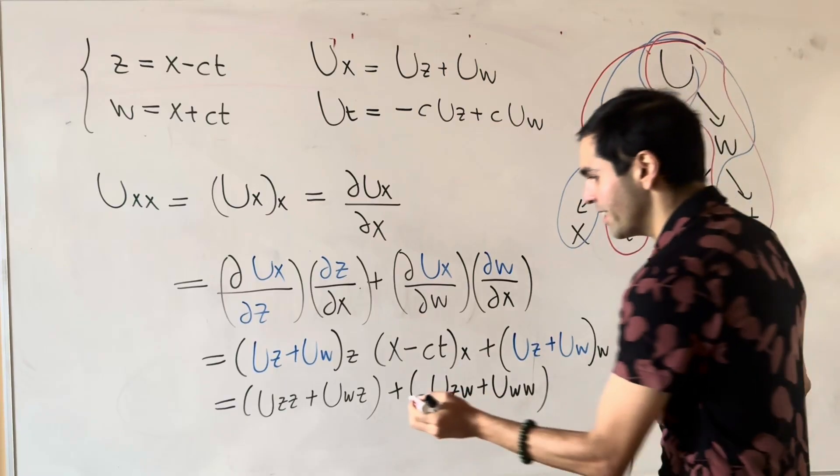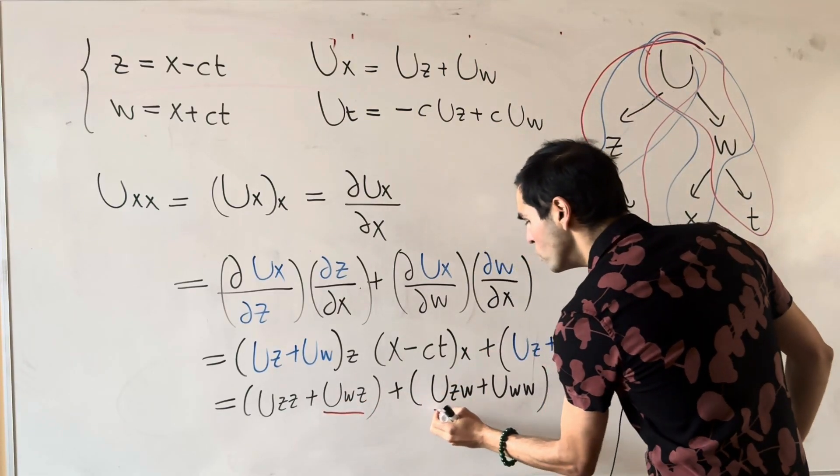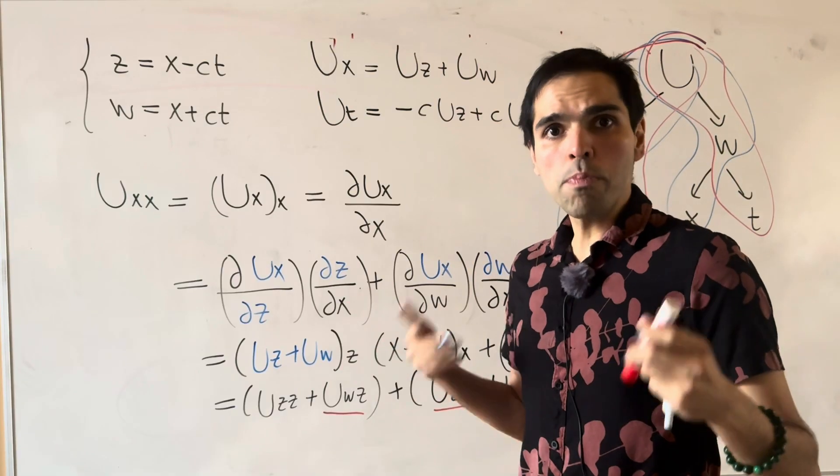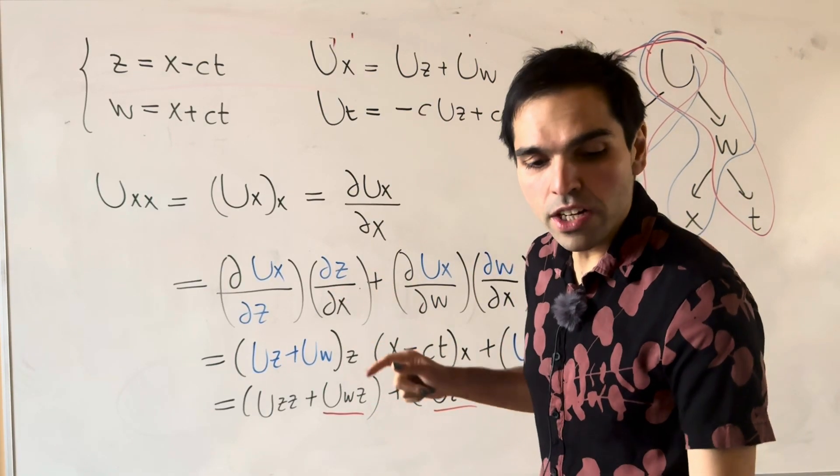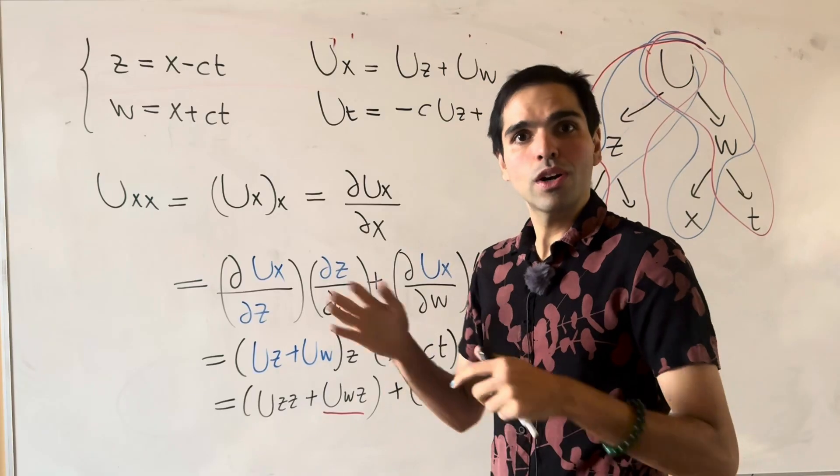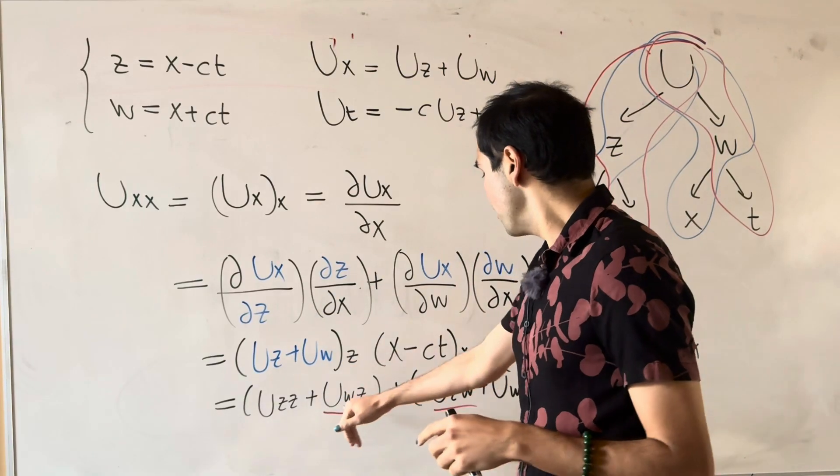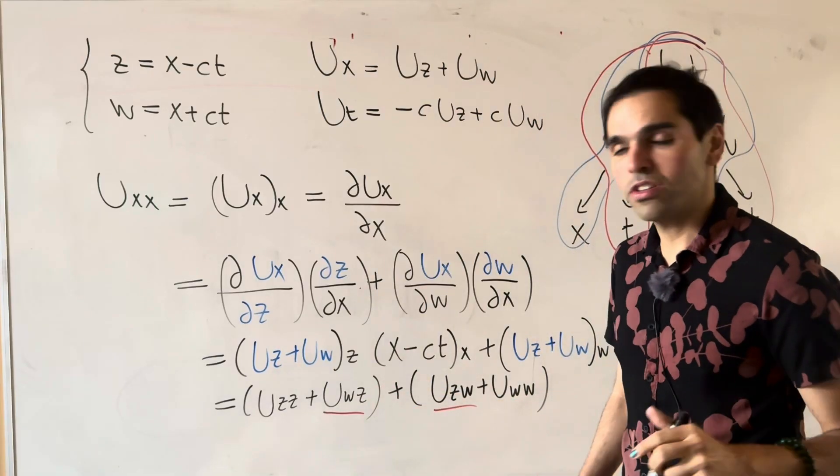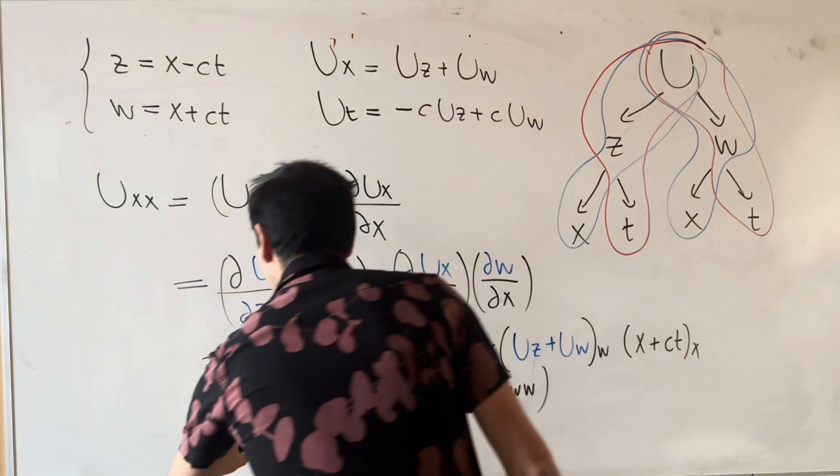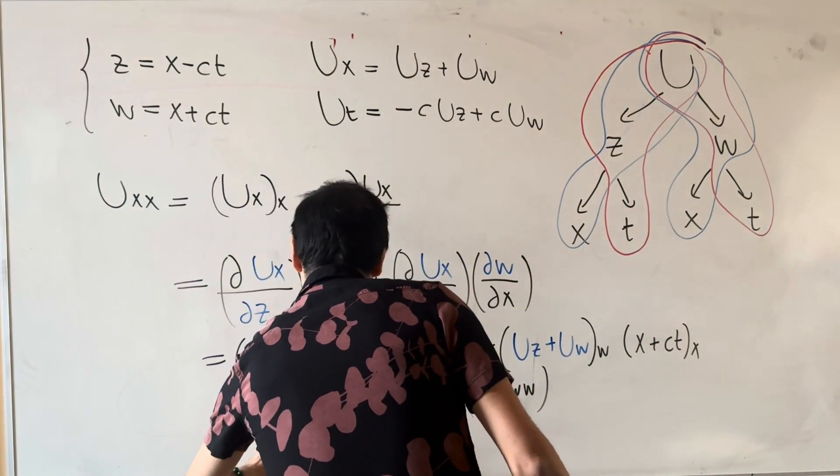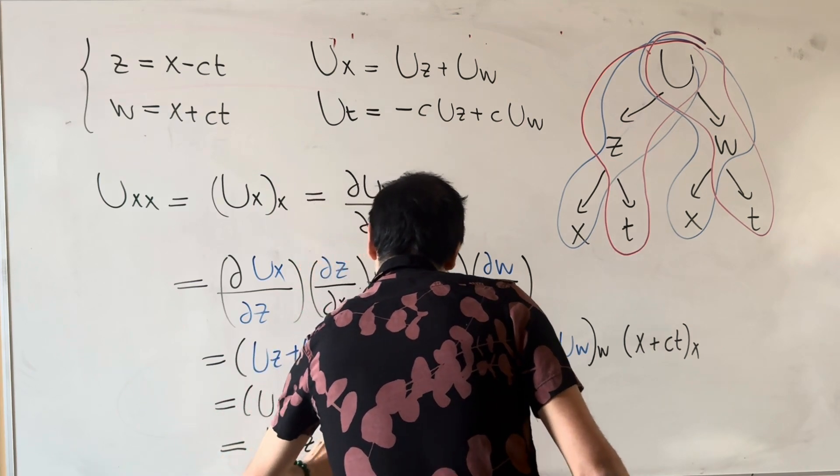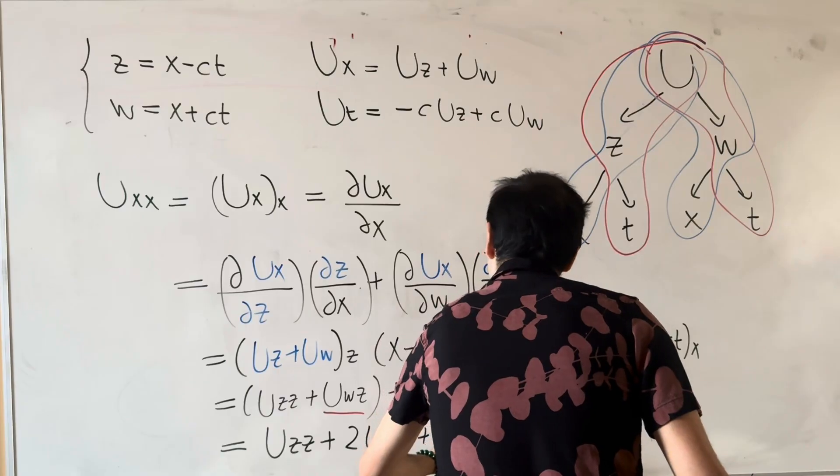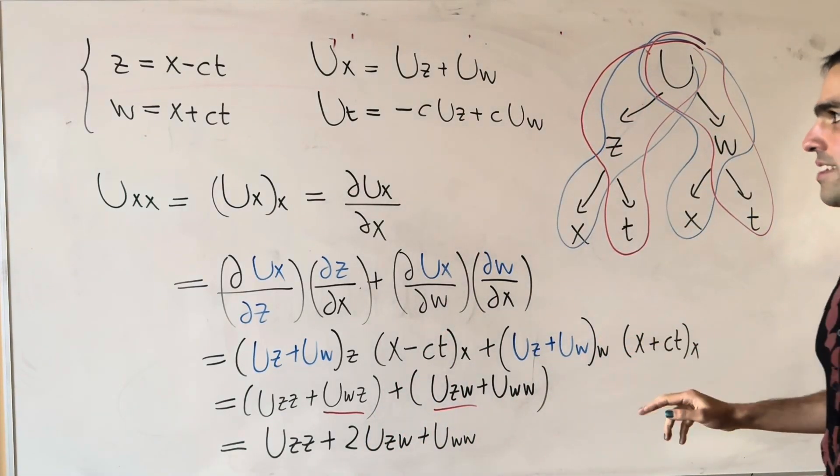And now, here's a very nice thing. We do have those mixed partial derivatives. So for our purposes, those are equal by what's called Clairaut's theorem. So Clairaut's theorem says if u is nice enough, then those mixed partial derivatives are equal. And so in the end, we get U_zz plus 2 U_zw plus U_ww. So that is U_xx.